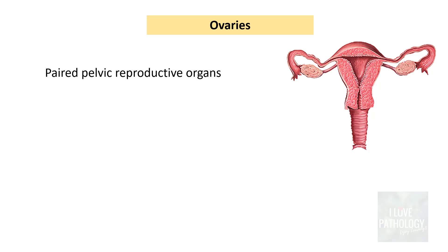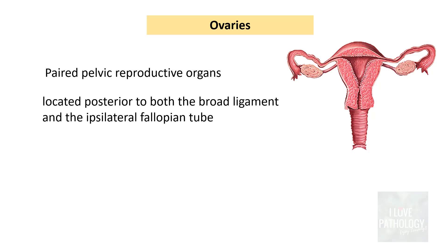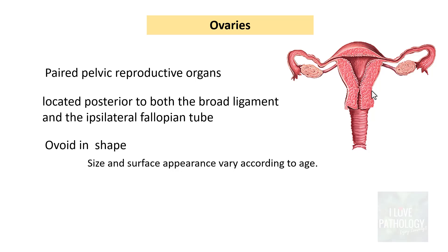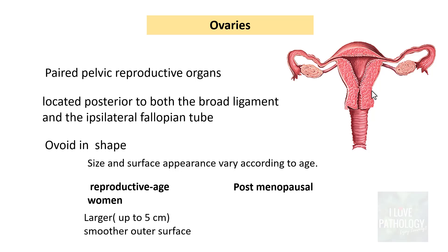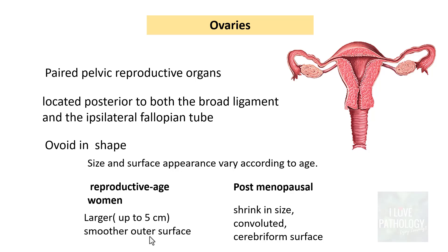The ovaries are the pelvic reproductive organs located posterior to both the broad ligament and the ipsilateral fallopian tube. These ovaries are ovoid in shape, and their size and surface appearance vary according to age. In reproductive age women they can be up to 5 centimeters with a smoother outer surface, whereas in post-menopausal women the ovaries shrink in size, becoming more convoluted with a cerebriform surface.